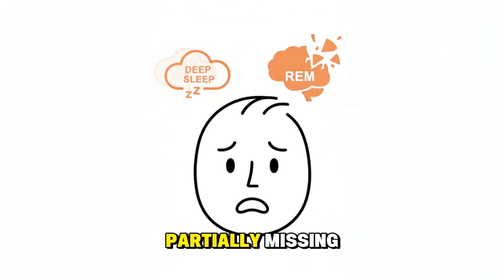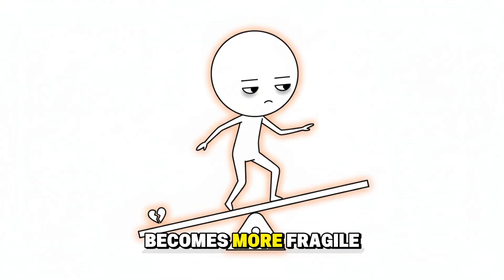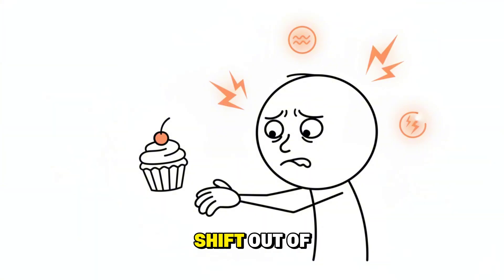Deep sleep is partially missing. REM cycles are incomplete. Your body uses stress hormones to keep you alert, which creates a sense of productivity that fades quickly when challenges appear. Your emotional balance becomes more fragile. Your tolerance for frustration lowers. You may feel focused one moment and mentally drained the next. Hormones related to hunger and mood shift out of balance. This is why you may crave more sugar, feel more irritable, or notice sudden mood swings.